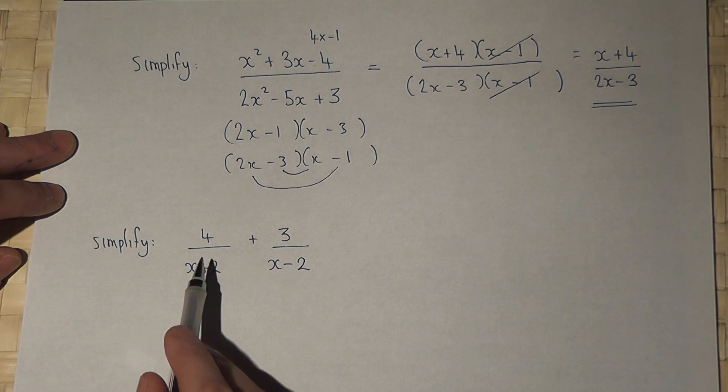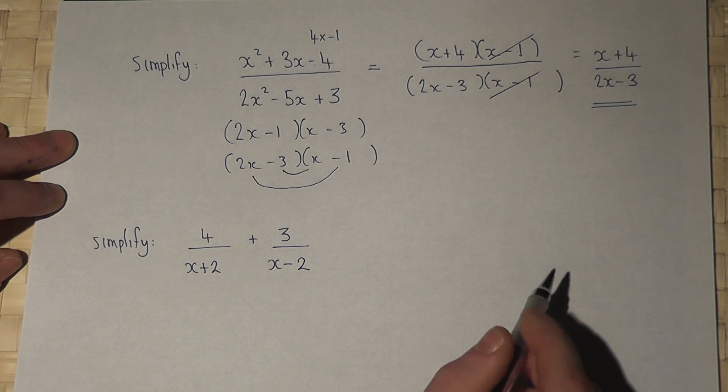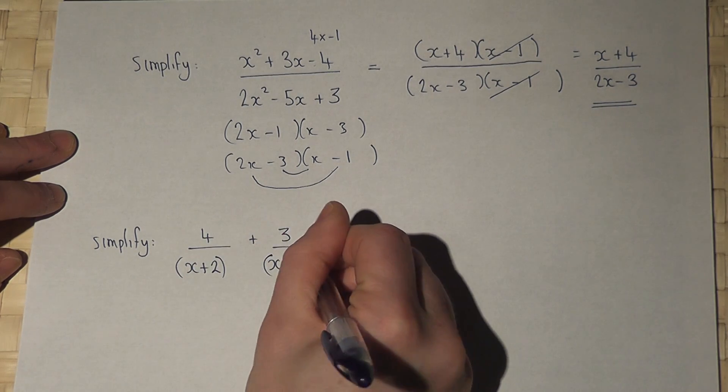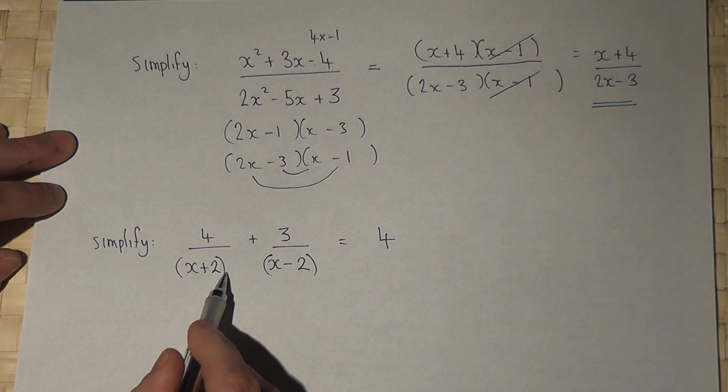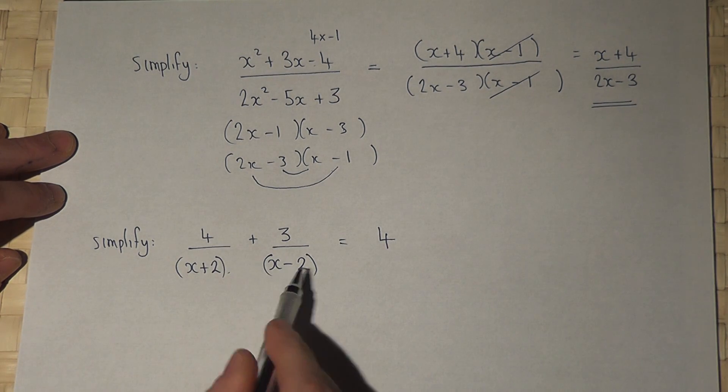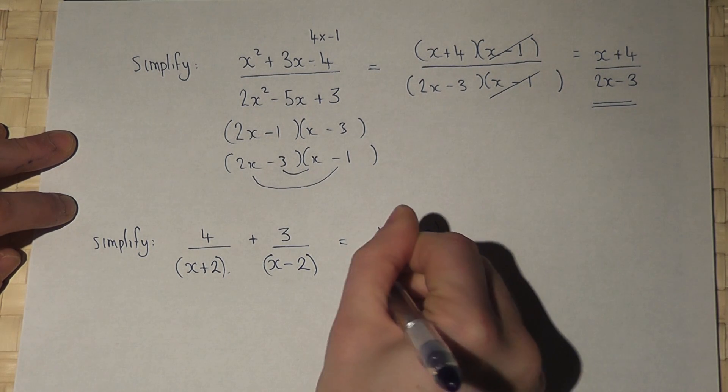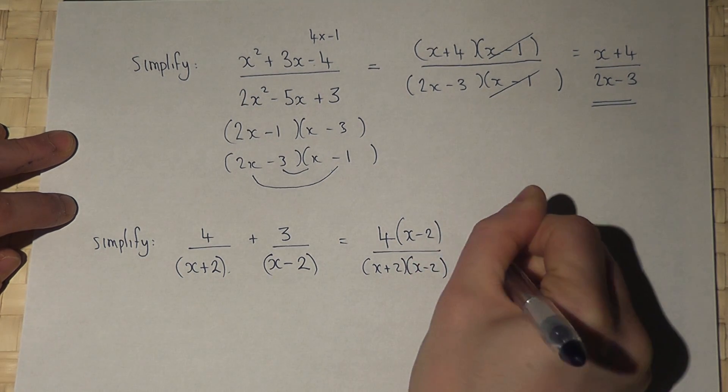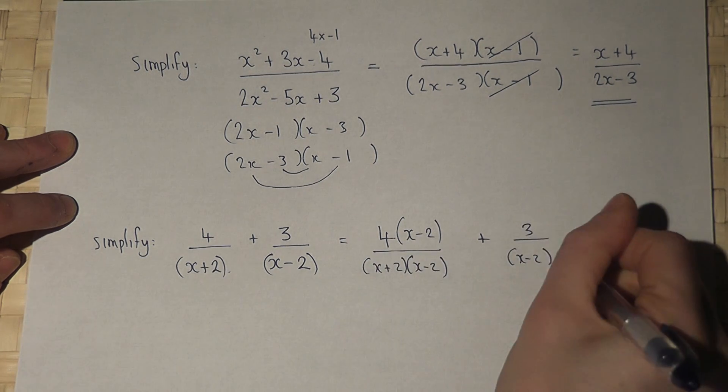The second example is adding together two algebraic fractions. Now the method here is to put brackets around the bottoms. Now then, I must times the first fraction, top and bottom, by x minus 2. I must then times the second fraction by the x plus 2.